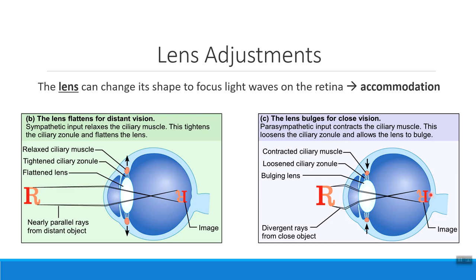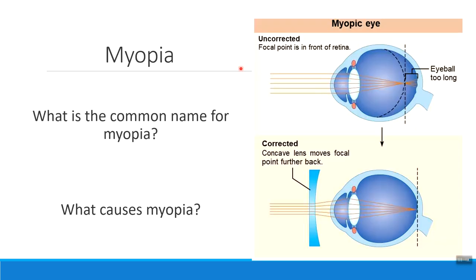Here's an important big picture idea to write down: for you to perceive light, it has to be focused on the retina. Whether I make my lens long and lean or short and stout, whatever I have to do to get those light waves onto the retina I will do, because if they're focused anywhere else I will not be able to perceive them. With that in mind, let's talk about some common vision disorders.